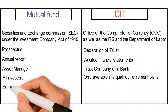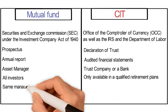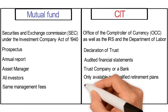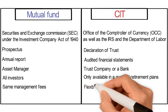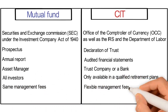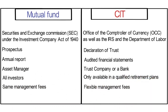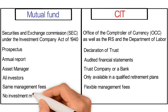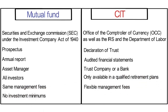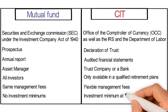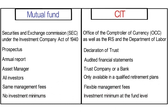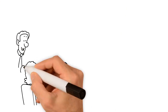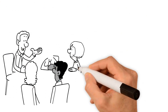The SEC mandates that mutual funds have the same management fees across all share classes. CITs allow for more flexible management fees through breakpoints depending on asset size. Mutual funds have no investment minimums, while CITs could require an investment minimum at the fund level.